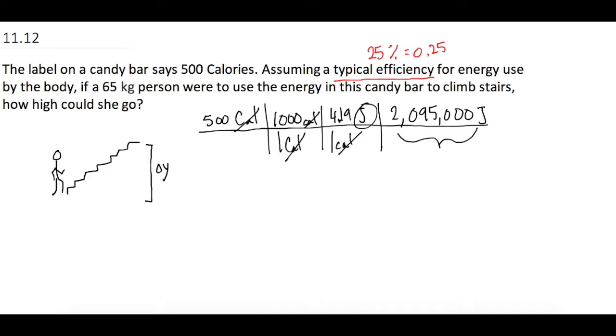So how much of this 2,000,000 are we able to use? If we times that by 0.25%, that gives us 523,750 joules. So this 500,000, that is the amount of energy that we're actually able to use to do work.